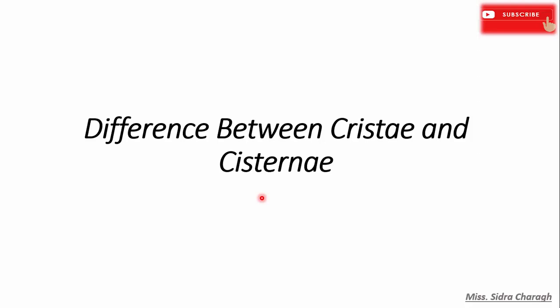In this lecture we will see what are the main differences between cristae and cisternae. The main difference is that cristae are the foldings of the inner mitochondrial membrane that enclose the mitochondrial matrix, whereas cisternae are